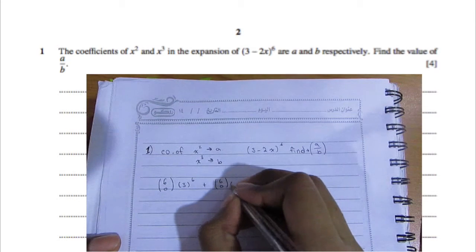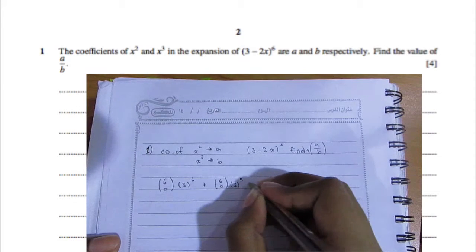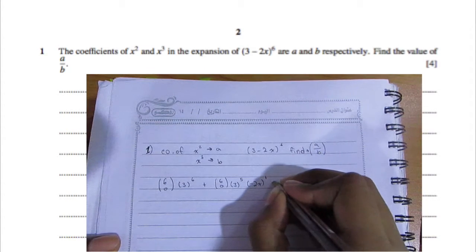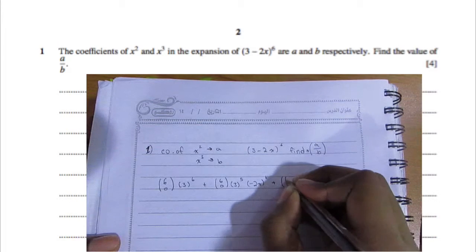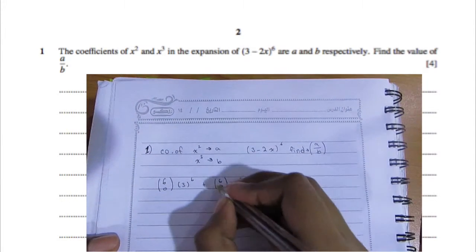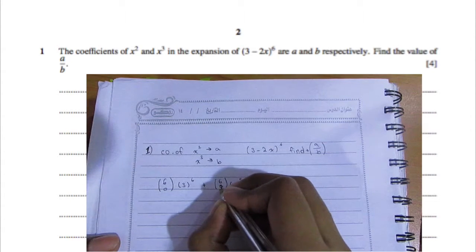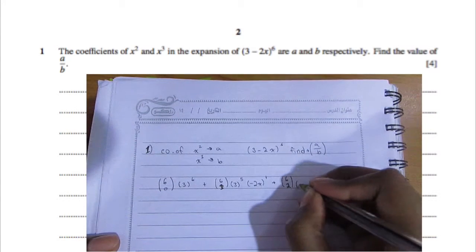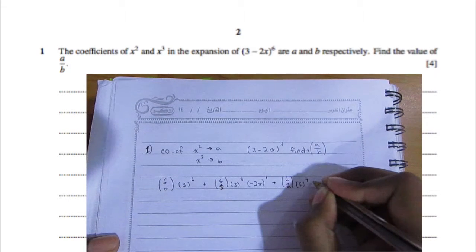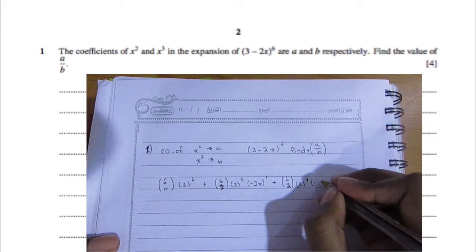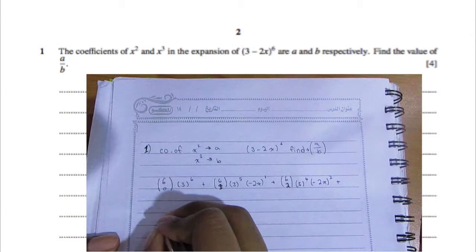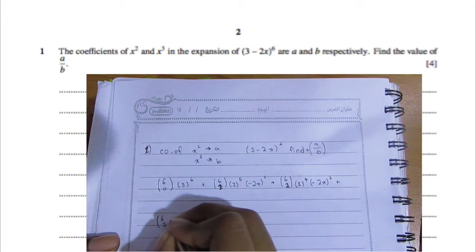To expand, use the binomial method. The exponent is 6, so place 6 at the top, starting with 0 then 1, 2, 3, and so on. So: 6C0 × 3⁶, then 6C1 × 3⁵ × (−2x)¹, continuing the pattern — subtracting one from the first term's power and adding one to the second.